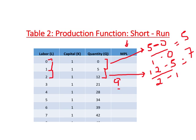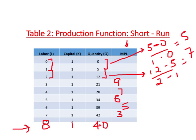The fourth worker has MPL of 7, the fifth worker 6, the sixth worker 5, and the seventh worker 3. For the eighth worker, with one unit of capital and output at 40, when you add that worker, output actually reduces from 42 to 40, so their productivity is negative 2.